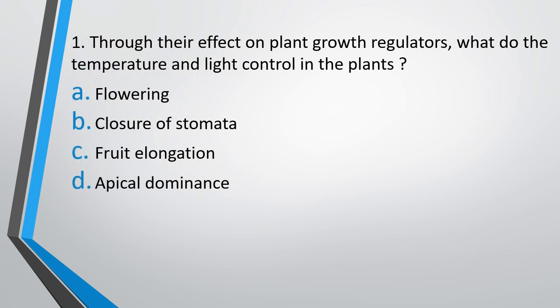Question No. 1. Through their effect on plant growth regulators, what do temperature and light control in the plant? Option A: Flowering. Option B: Closure of stomata. Option C: Fruit elongation. Option D: Apical dominance. The correct answer is Option A: Flowering of the plant is controlled by temperature and light.